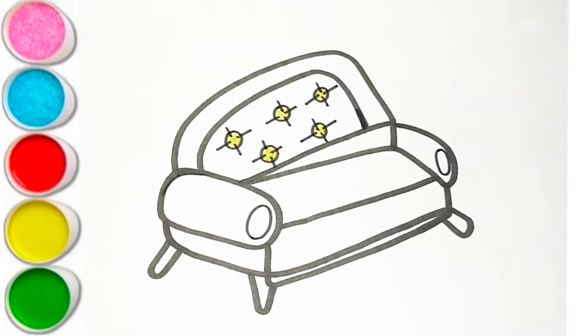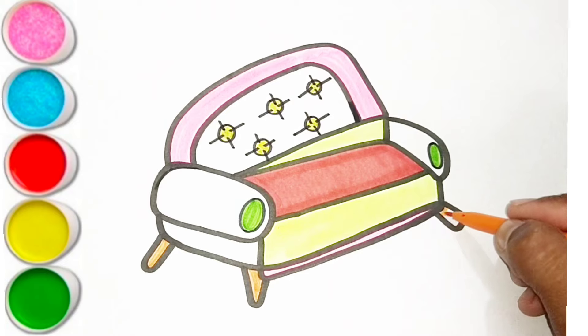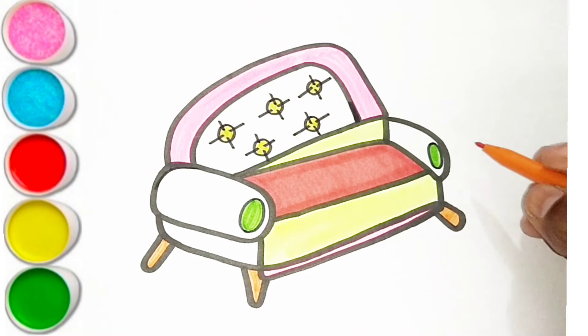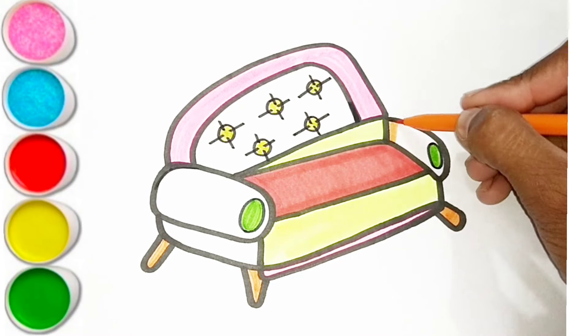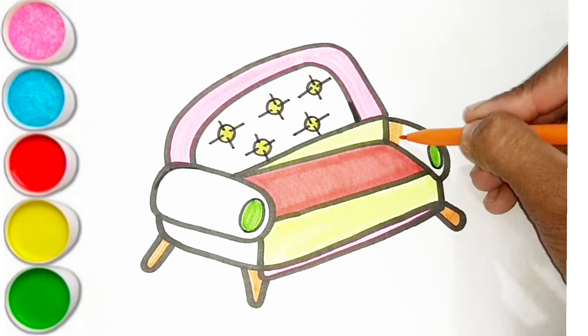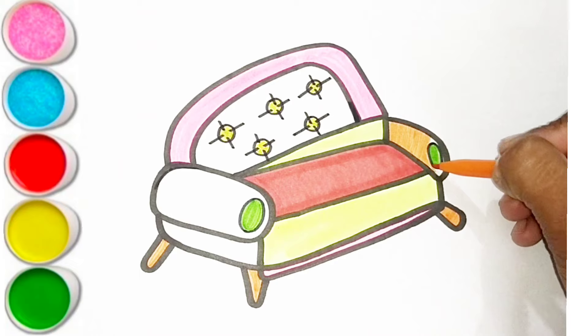Q is for queen, qu-qu-queen. R is for rabbit, r-r-rabbit. S is for sun, s-s-sun. T is for toad, t-t-toad.